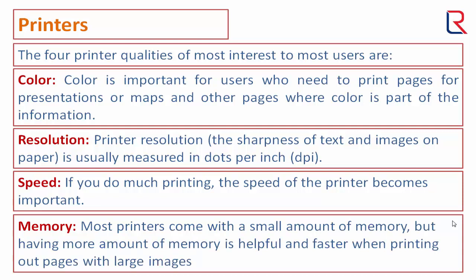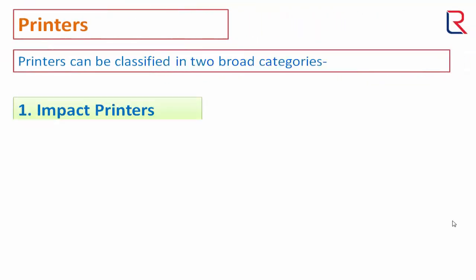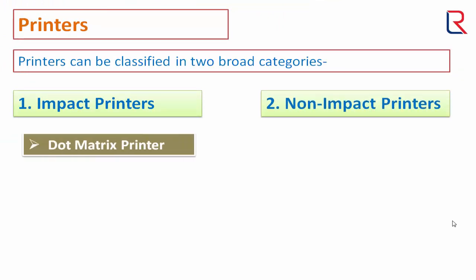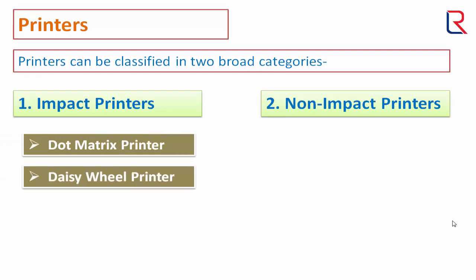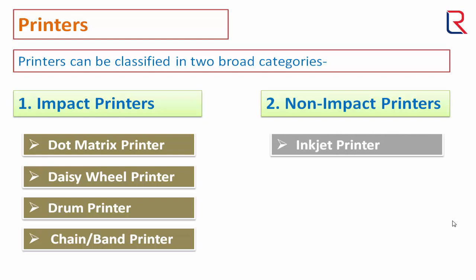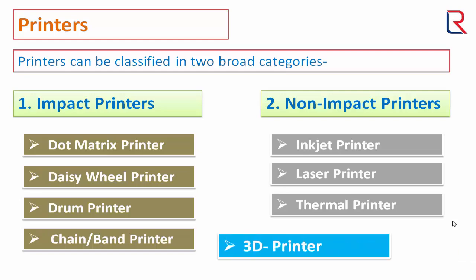Printers can be classified in two broad categories: impact printers and non-impact printers. In the impact category we have dot matrix printer, daisy wheel printer, drum printer, and chain printer. In the non-impact category we have inkjet printer, laser printer, thermal printer, and a special category — the 3D printer.